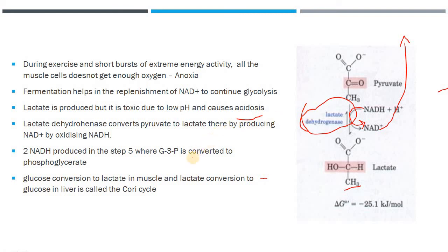Glucose is converted to lactate in the muscle, and once lactate is formed it can convert itself back to glucose — this cycle is called the Cori cycle, which takes place in the liver.